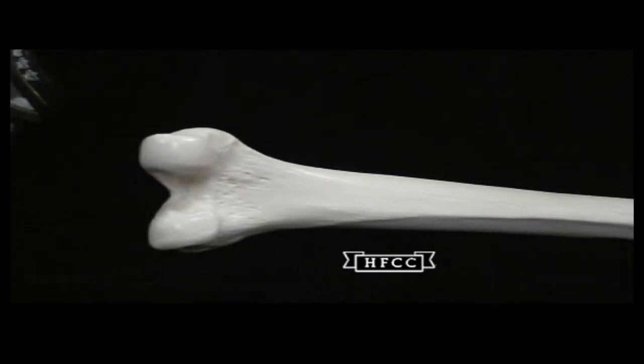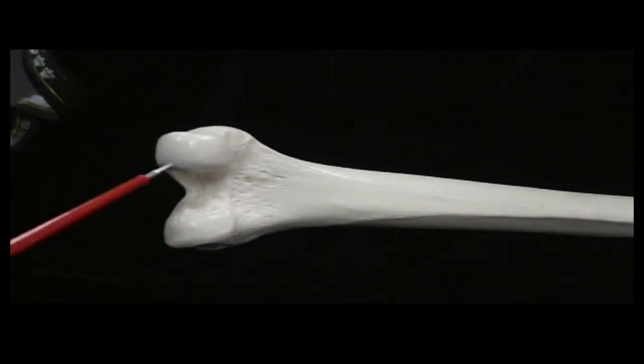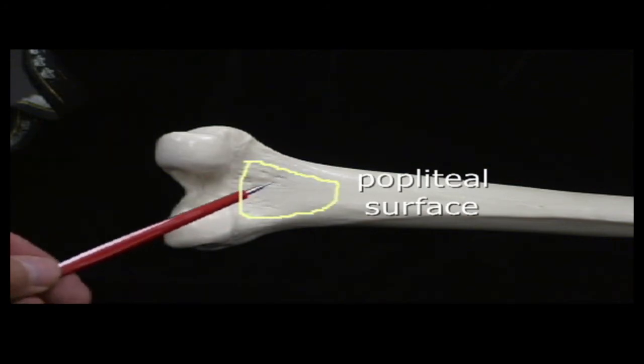And then moving down toward the distal posterior view. The popliteal surface. This is flat. It means back of knee. Thus we're at the back of the knee.